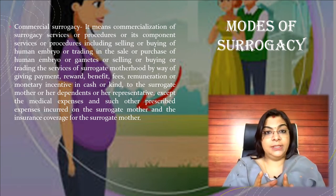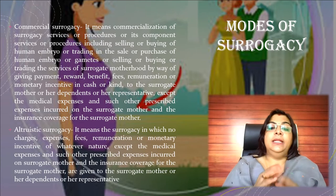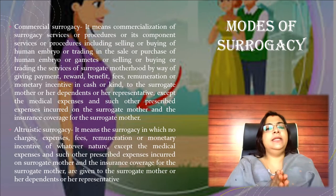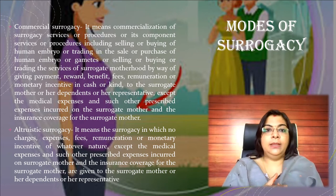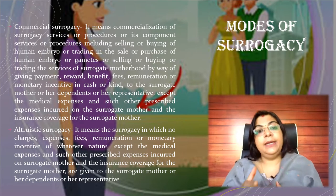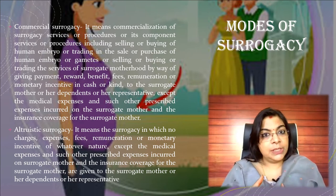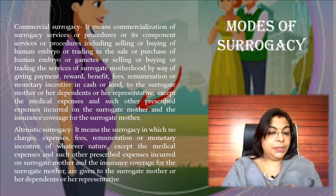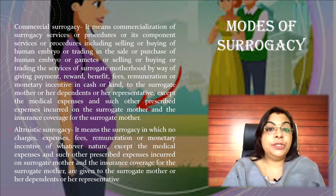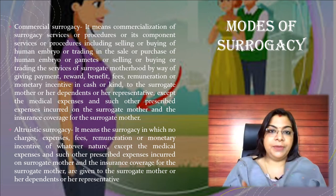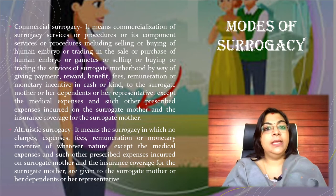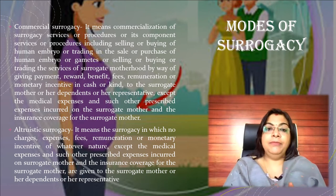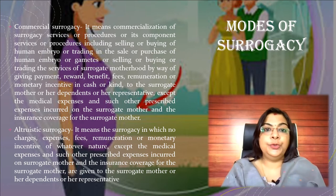The other form is altruistic surrogacy. In this, the main gesture is to help the infertile couple. Only the expenses related to pregnancy, delivery, insurance, and the child and surrogate mother are covered — but the intention is not commercial. The intention is only love, affection, and humanity. In commercial surrogacy there is only business; in altruistic surrogacy the main intention is humanity, love, and affection. That is the basic difference between the two modes of surrogacy.